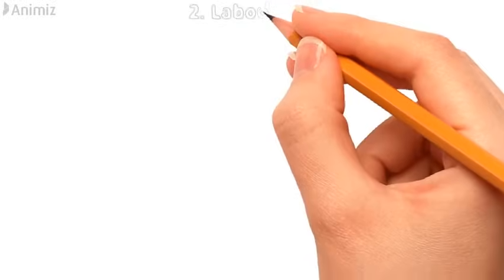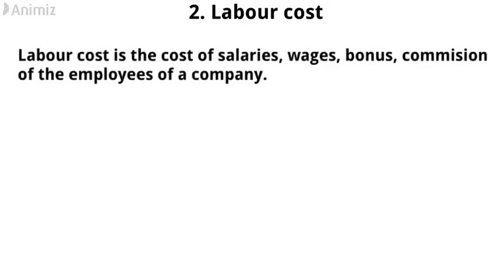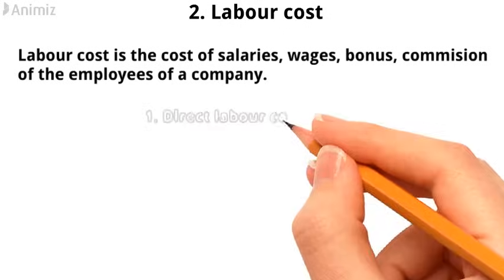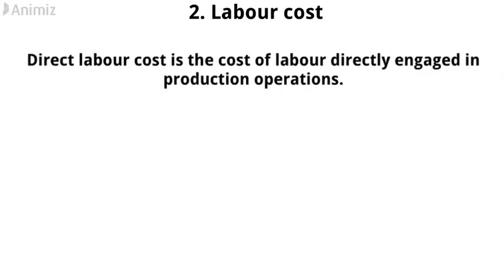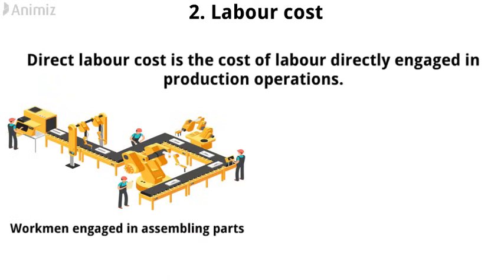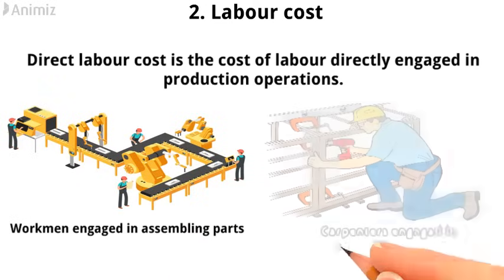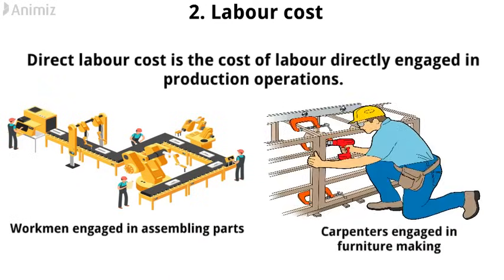2. Labor cost. Labor cost is the cost of salary, wages, bonus, and commission of the employees of a company. Labor cost is also divided into two portions: direct labor cost and indirect labor cost. Direct labor cost is the cost of labor directly engaged in production operations. For example, workmen engaged in assembling parts, carpenters engaged in furniture making, etc.